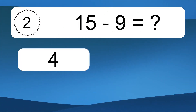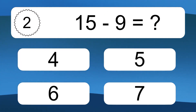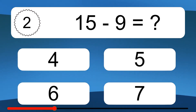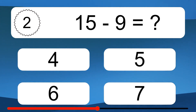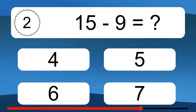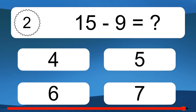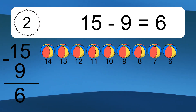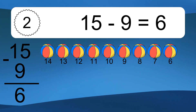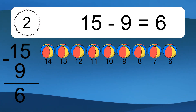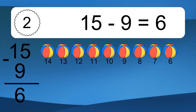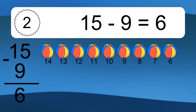15 minus 9 equals what? 15 minus 9 equals 6. Let's count it: 14, 13, 12, 11, 10, 9, 8, 7, 6.